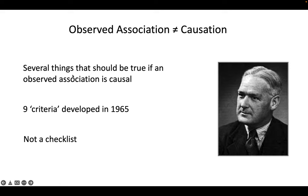He came up with this idea where there are nine criteria that will likely be true if an exposure and outcome are causally related. It's kind of overcoming the idea that association isn't causation. In an experimental setting, it's easy to make it so nothing can change except what you're interested in, and you can be fairly certain that whatever phenomena you observe is due to the one thing you allowed to change. But with observational studies, you're not that lucky — you're always a little uncertain whether what phenomena you're observing is due to the exposure you think is causing it.